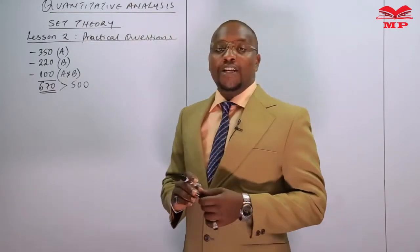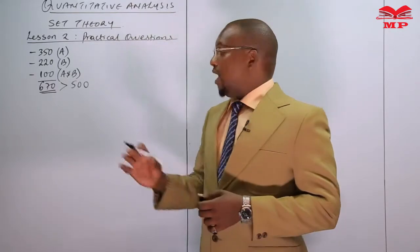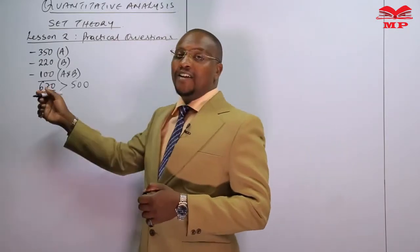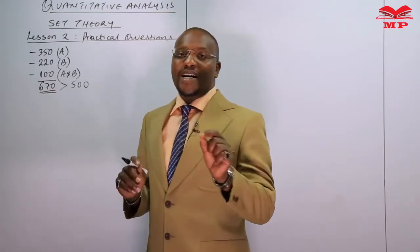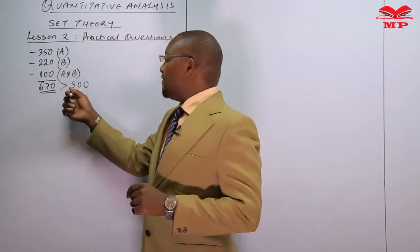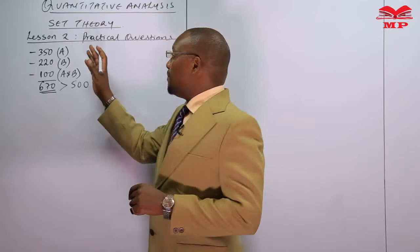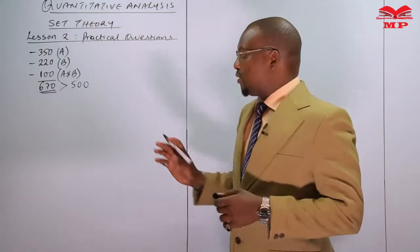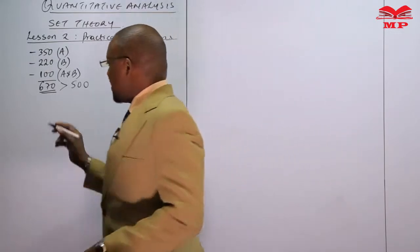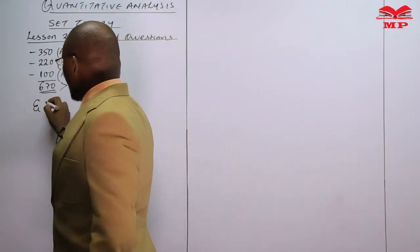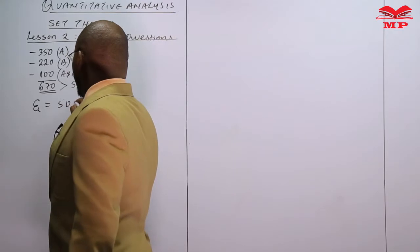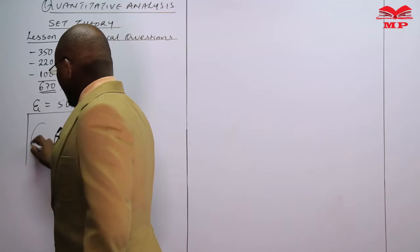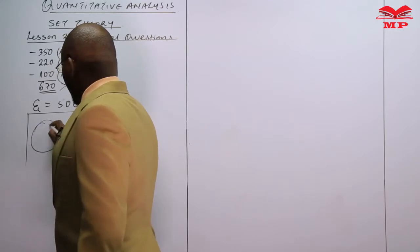It is not possible to work with 670 when there are only 500 consumers, so we need to apply set theory logic in our analysis. We are going to present the universal set of 500, then the individual sets — set A and set B.